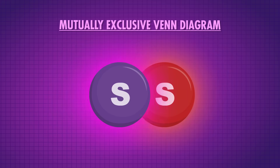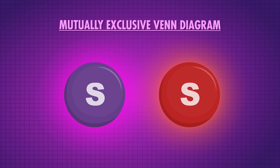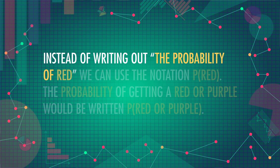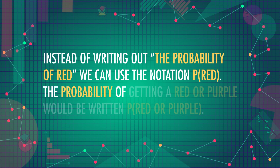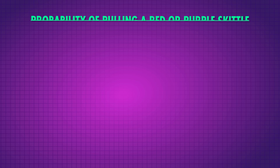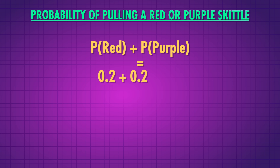So far we've been talking about the probability of just one event, but often there may be two or more events we want to consider. Like what if you want to know the probability of picking a purple or a red Skittle from a bag? The proportion of each color in a bag of Skittles is roughly equal — twenty percent for each of the five colors. Since a Skittle can't be two different colors at once, the color possibilities are mutually exclusive, meaning the probability of a Skittle being red and purple at the same time is zero. So we can use the simplified addition rule: the probability of getting a red or purple Skittle is the sum of P of red and P of purple. Instead of writing out 'the probability of red,' we can use the notation P of red, and P of red or purple equals P of red plus P of purple.